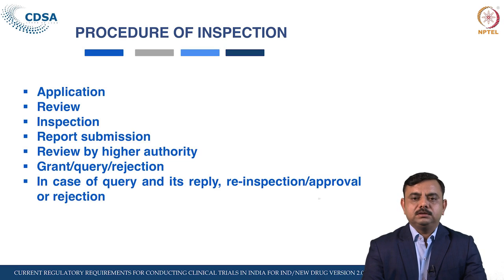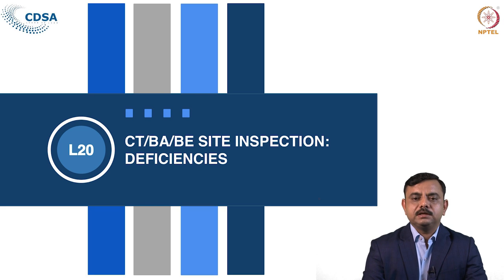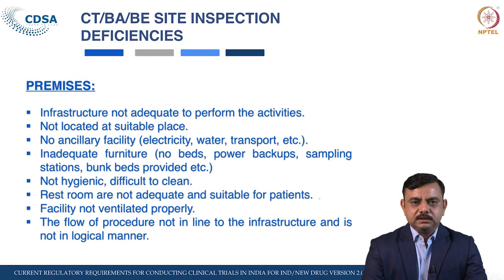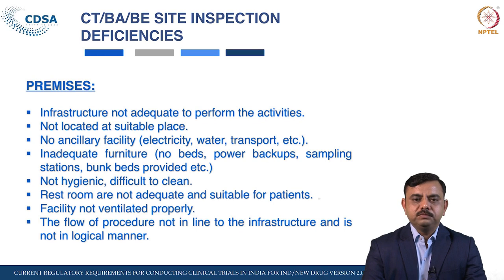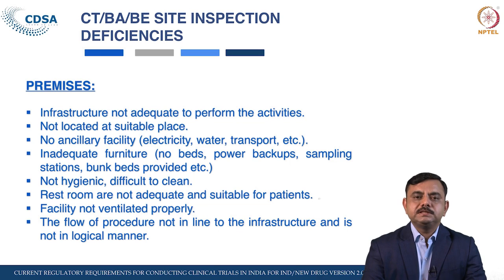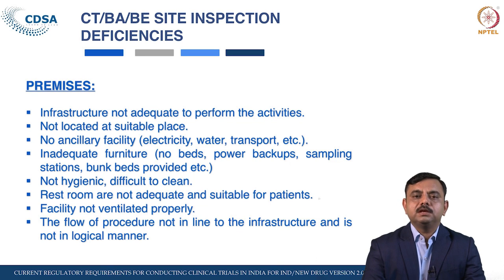Now let us move to the actual deficiencies. There can be a variety of deficiencies that vary from inspector to inspector, auditor to auditor, and site to site. We will focus mainly on deficiencies with respect to BAV study centres across the three P's. Regarding premises, the infrastructure may not be adequate to perform all activities related to bioequivalence and bioavailability studies, and the facility may not be located at a suitable place.